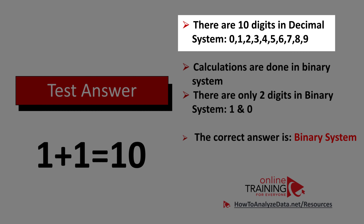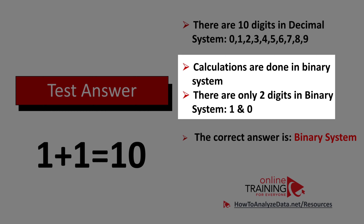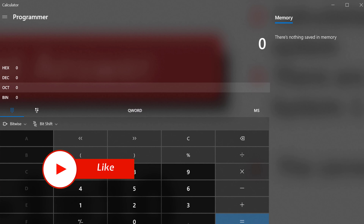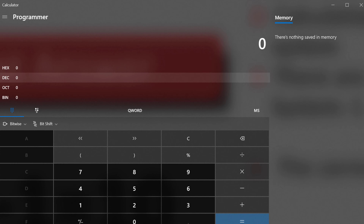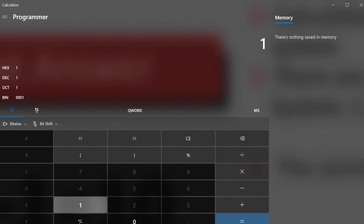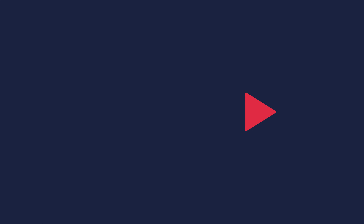Typically when we do calculations, we use 10 digits in the decimal system: 0 through 9. But here, calculations are done in the binary system, which has only two digits: 1 and 0. So when you add 1 plus 1 in the binary system, what looks like 10 is actually 2. The correct answer is that this calculation is possible because of the binary system. If you launch the calculator in Windows and switch to the programmer calculator, you can choose binary mode — and 1 plus 1 equals what looks like 10, which in reality is 2 in the binary system.